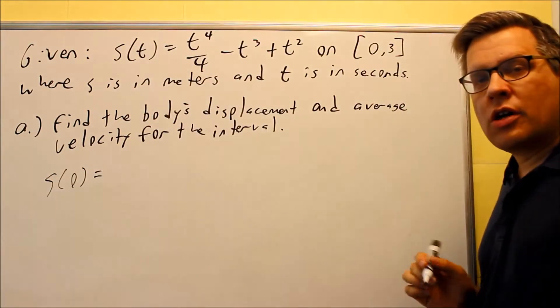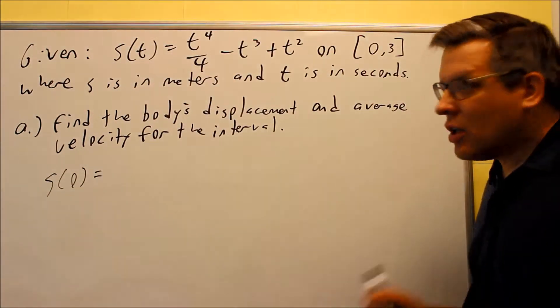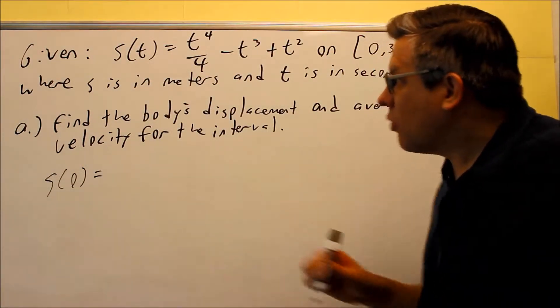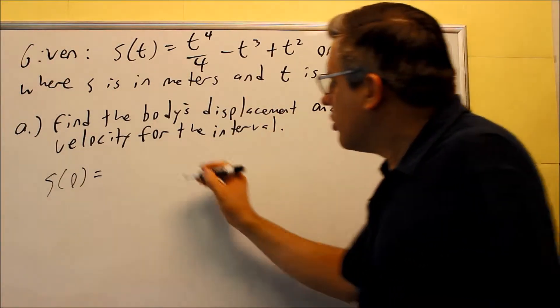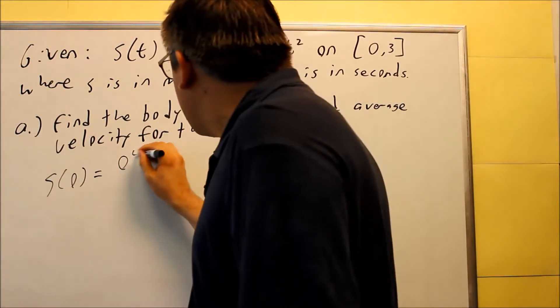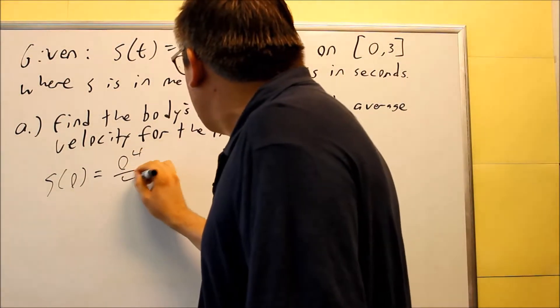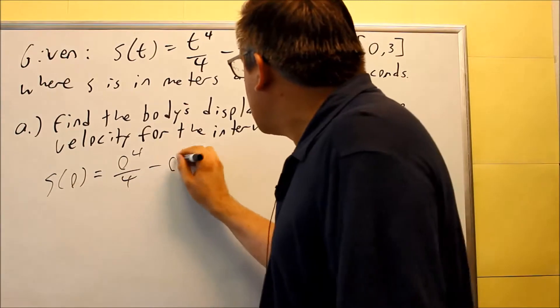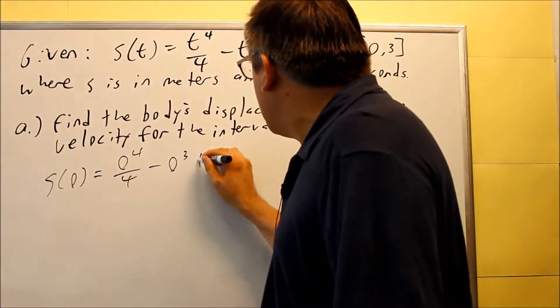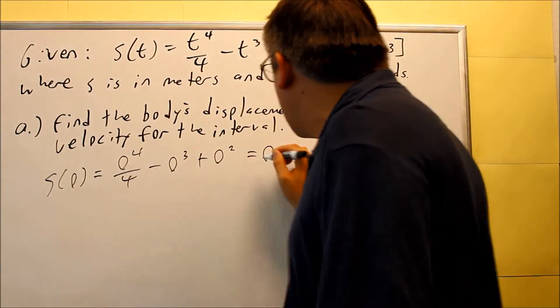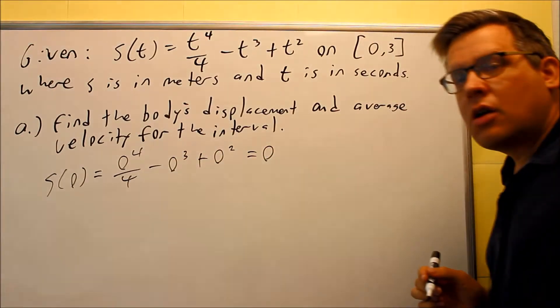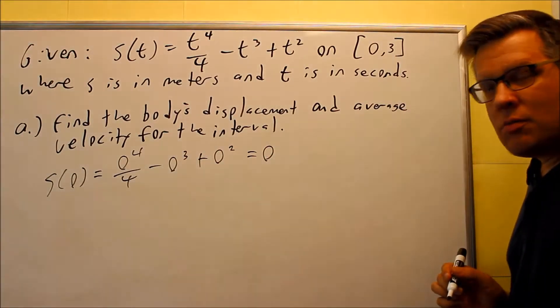Find out where the starting point is at zero seconds. If I put zero in: zero to the fourth over four, minus zero cubed, plus zero squared — that's going to give us zero.